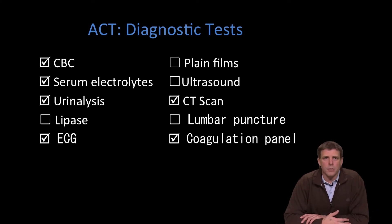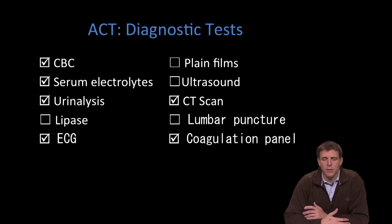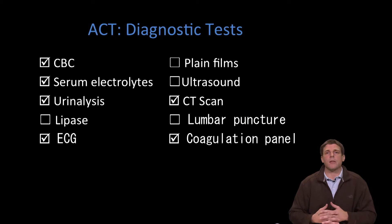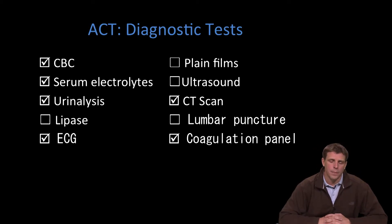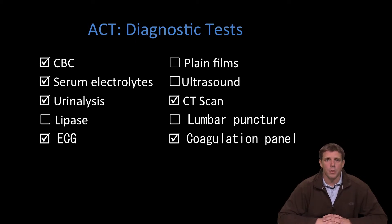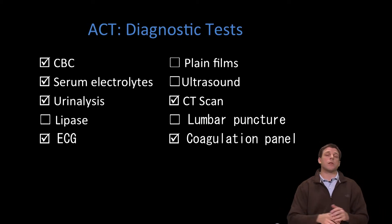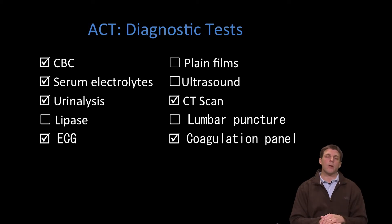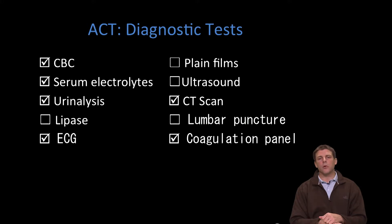The checked tests are of particular importance in this case. A complete blood count will help determine if the patient is severely anemic and give us an indication of different types of infection or other diagnoses contributing to altered neurologic findings. Serum electrolytes are also important — sodium levels in particular matter, as both low and high sodium can produce altered consciousness, seizure, or neurologic findings.